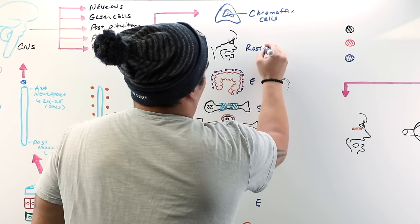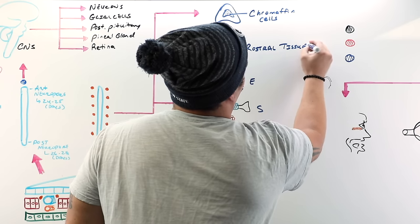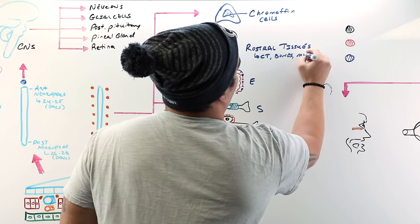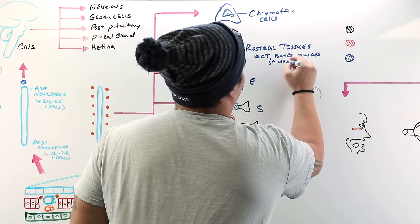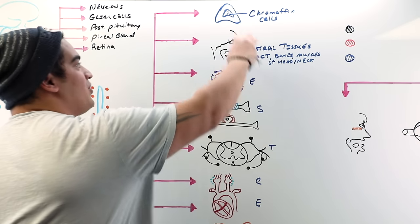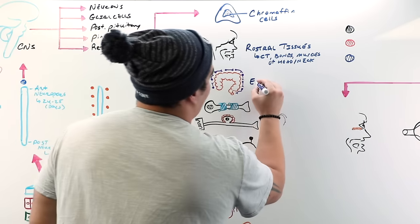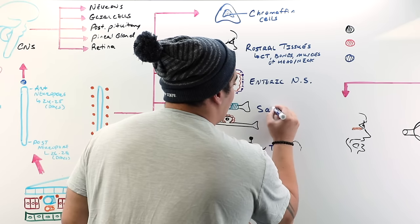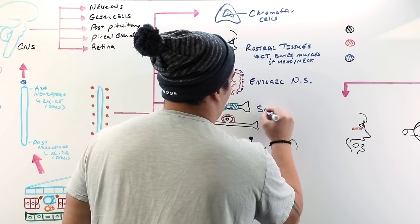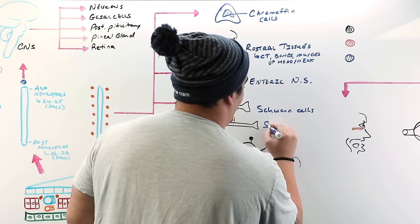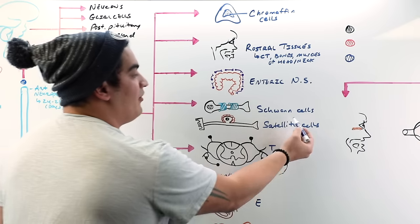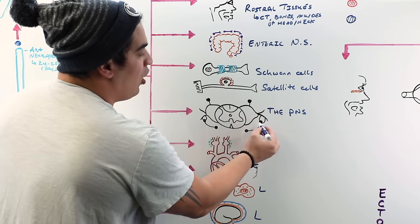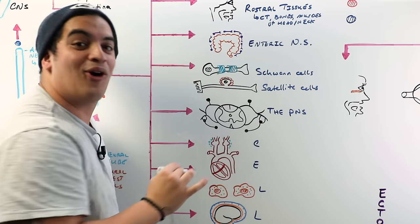R is for rostral tissues — meaning towards the head — so all the connective tissue, bones, and muscles of the head and neck. E is for the enteric nervous system. S is a double: satellite cells and Schwann cells, which are the glial cells of the peripheral nervous system. Also included is all the neural tissue of the peripheral nervous system — your spinal nerves and their ganglia.